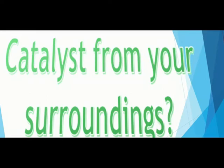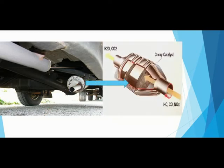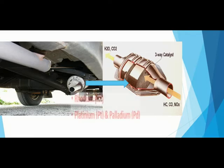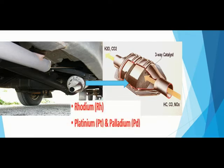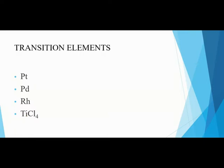There are many examples. The catalytic converter in our cars converts harmful emissions of the engine into less toxic ones like water and carbon dioxide. For this purpose it uses catalysts: rhodium, platinum, and palladium. Another example is the making of plastics, which uses titanium tetrachloride as catalyst. All of these — platinum, rhodium, and titanium tetrachloride — are transition elements.